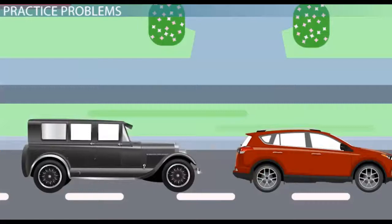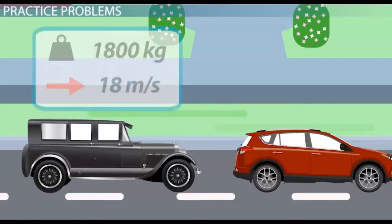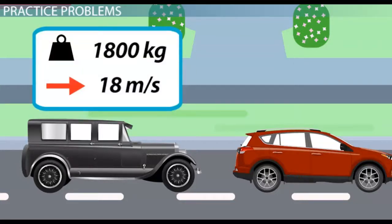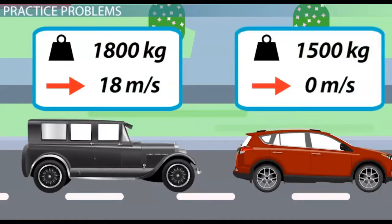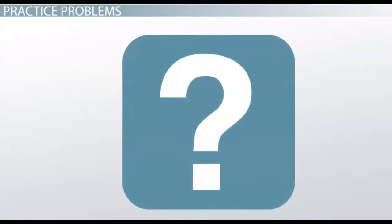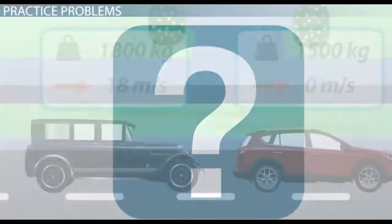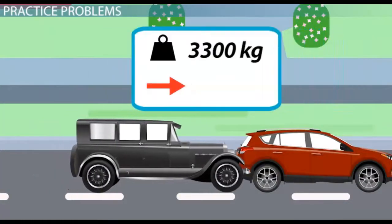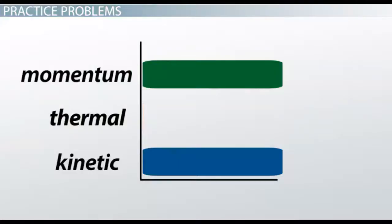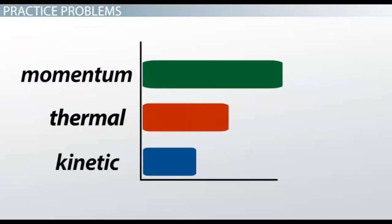Let's revisit the car crash you witnessed again and see what we can learn about it using conservation of momentum. Say the car in back had a mass of 1,800 kg and was moving at 18 m per second originally. The car in front had a mass of 1,500 kg and was stopped. How fast were the two cars moving immediately after the collision? This is a great example of an inelastic collision because the cars are moving together after the collision. Therefore, they have a common final velocity. Just like in all collisions, the total momentum of both cars together must be the same before and after the collision.